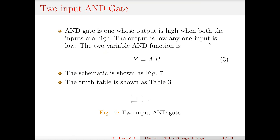There is something called conjunction — the AND operation. Both events should happen simultaneously. Like the class will happen only if I and my teaching assistant both come. If one of us comes the class will not happen — both must come. The AND gate output is high when both inputs are high. The output is low if any one of the inputs is low. Both or all inputs must be high for the output to be high. It is called a conjunction — it is actually an intersection.